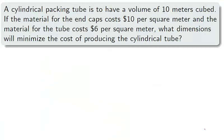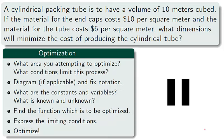Let's take a second example. A cylindrical packing tube is to have a volume of 10 meters cubed. If the material for the end caps costs $10 per square meter, and the material for the tube costs $6 per square meter, what dimensions will minimize the cost of producing this cylindrical tube? Now take a minute to challenge yourself. Pause the video and attempt to minimize the cost in constructing the tube, but be sure to follow these steps outlined in the fence example.